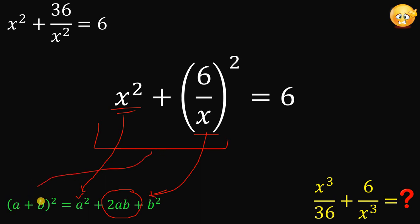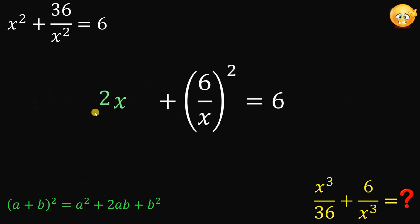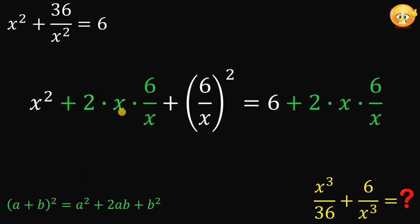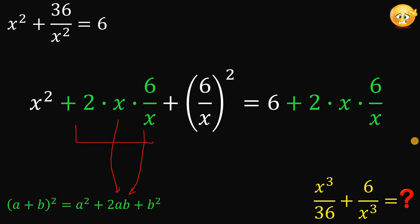After that, we can rewrite the left-hand side in the form a plus b raised to the power of 2. Let's do that — we'll add 2 times x times 6 over x to both sides, where x serves as a and 6 over x serves as b, to keep the equation balanced.